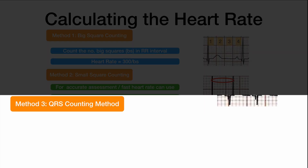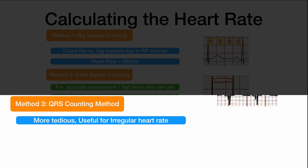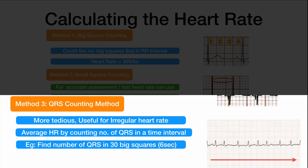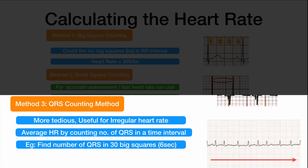The third method is the QRS counting method, where we count the number of QRS complexes in a specified time interval. This method is more tedious but is the preferred method for calculating heart rate when the rhythm is irregular. We count QRS complexes in a fixed interval — the bigger the interval, the more accurate. Since 30 big squares represents 6 seconds, the number of complexes in 30 big squares gives beats in 6 seconds. Multiply by 10 to get beats in 60 seconds — that is your heart rate.